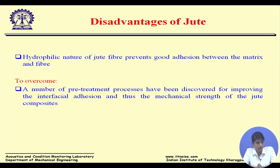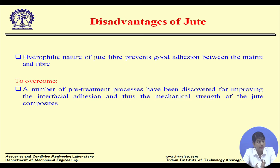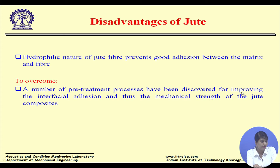What are the disadvantages of jute? Because jute is hydrophilic in nature, it is difficult to form a good bond between the fiber and the matrix — the hydrophilic nature prevents good adhesion. To overcome this, we pre-treat the surface. A number of pre-treatment processes have been developed for improving interfacial adhesion and thus improving the mechanical strength of the jute composite.